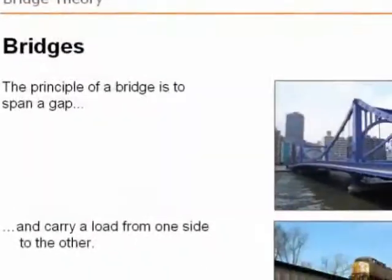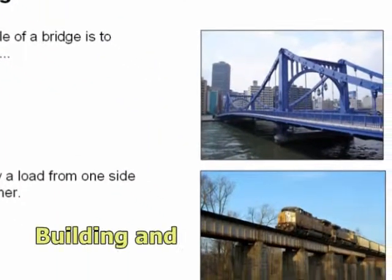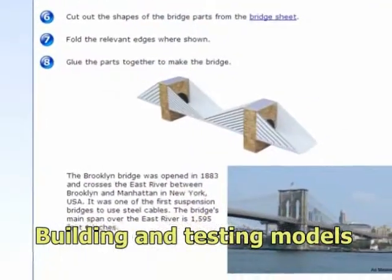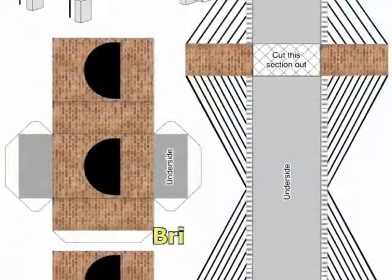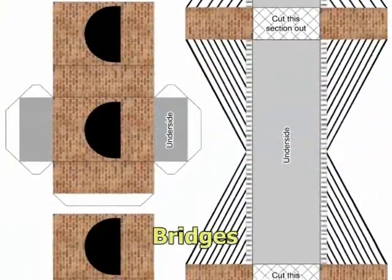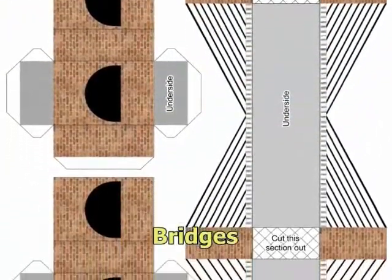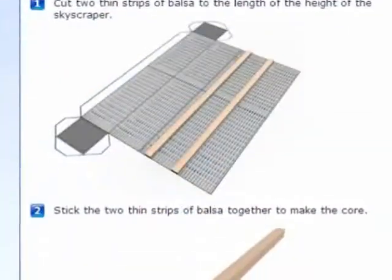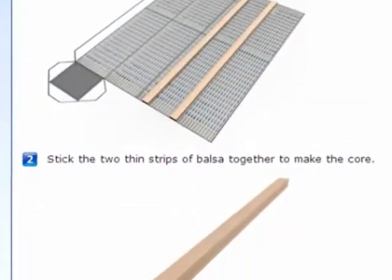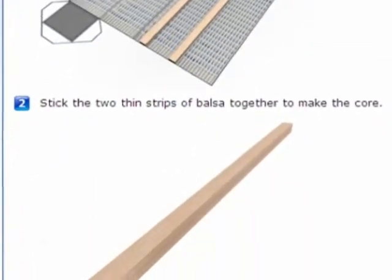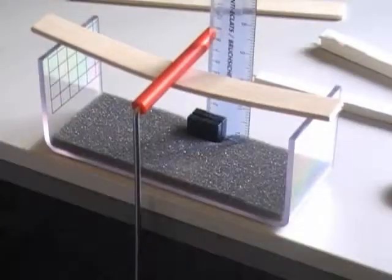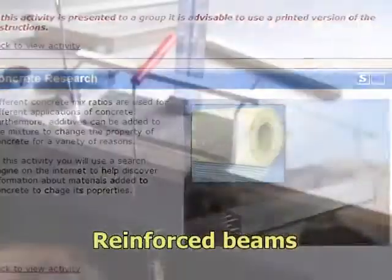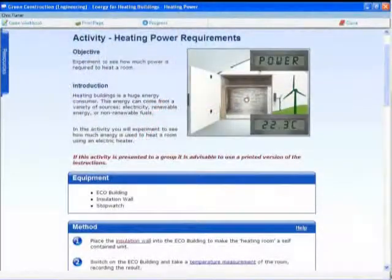Using a variety of modelling materials, students construct and test structures. Example models include bridges, skyscrapers to identify the importance of a central core, various beam structures to compare strength, and reinforced beams to test their benefits.